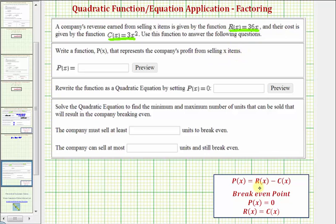The profit function P(x) equals the revenue function R(x) minus the cost function C(x). So in this case, we would have our profit function P(x) = R(x) = 36x, then minus C(x) which equals 3x². We do have to be careful if the cost function is more than one term to make sure we subtract the entire cost function.